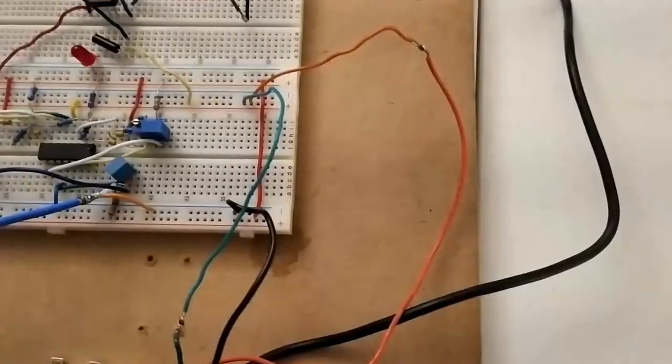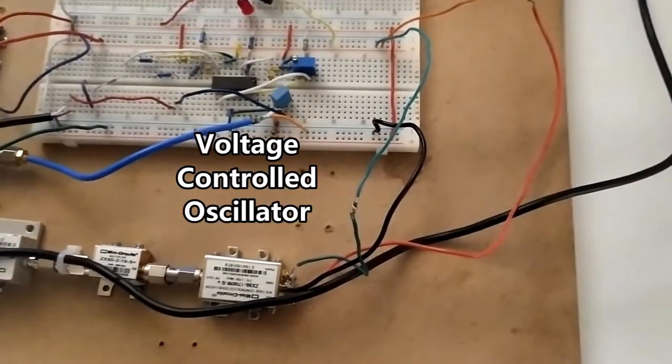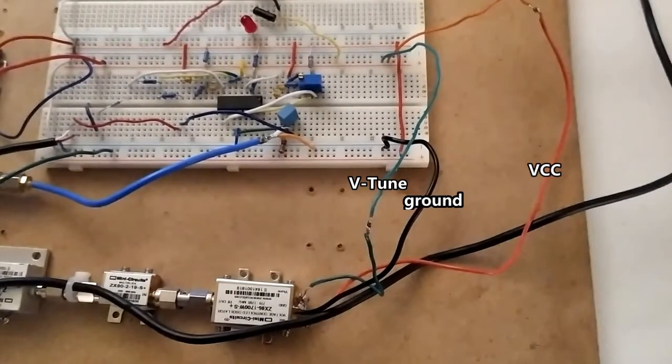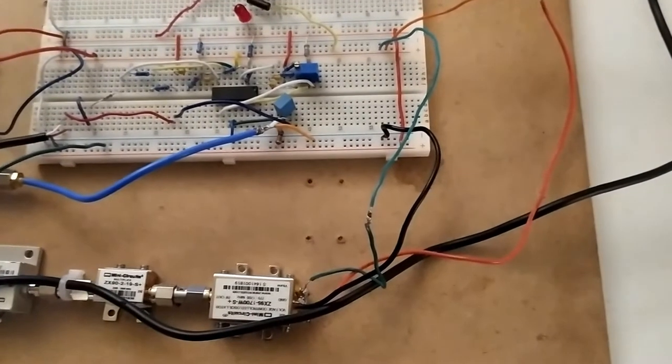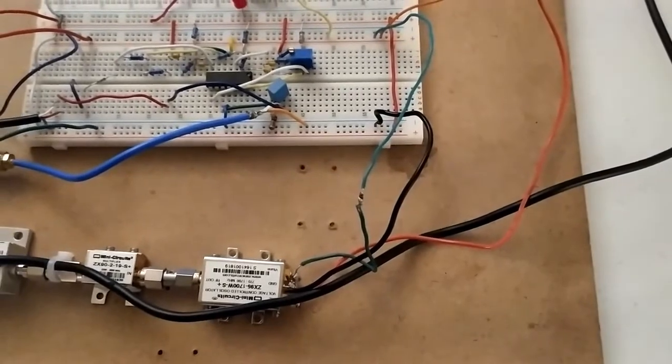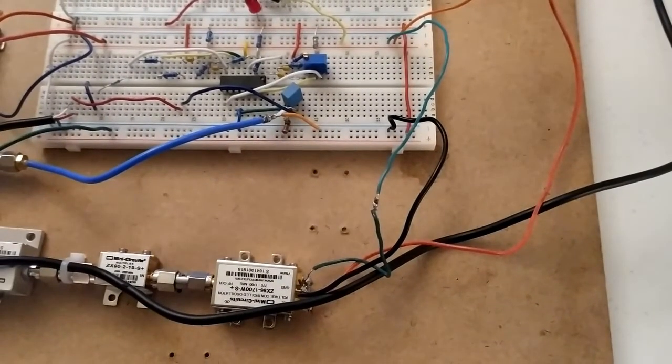So moving on, this first RF component is the voltage controlled oscillator. It has three terminals, one for the ground, one for VCC, and one for VTune. The VCC and the ground are pretty self-explanatory. We send 12V to this VCC and 0V to the ground.